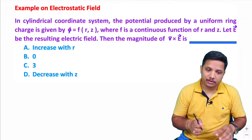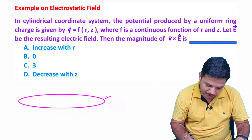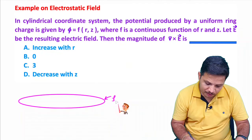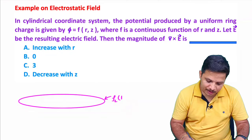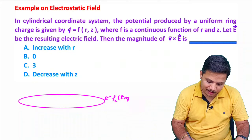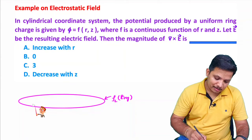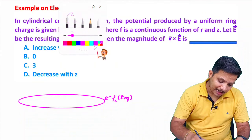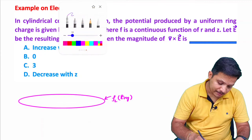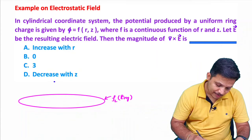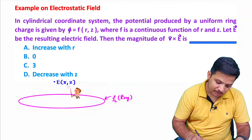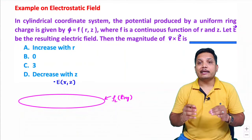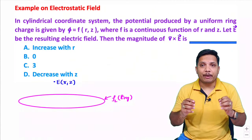Let me draw the situation first. We have a uniformly charged ring with rho L charge density. This ring is generating an electric field in the space. The electric field will be a function of r and z, but it is not a function of time, as the electric field is time independent.